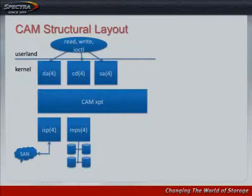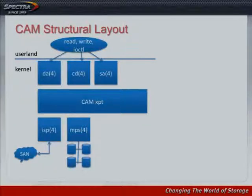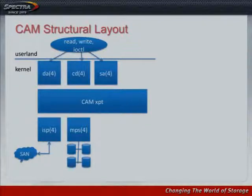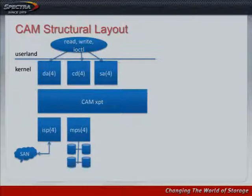Here is the structural layout of CAM. At the top you have user land with read, write, and ioctl system calls that go into the DA (direct access), CD-ROM, and SA (sequential access/tape) peripheral drivers — that's the peripheral driver level. Below that is the CAM XPT or transport layer, which is the mid-layer that routes commands from top to bottom. At the bottom is the SIM layer, the device driver layer in CAM — the ISP and MPS drivers are just two of many device drivers there.